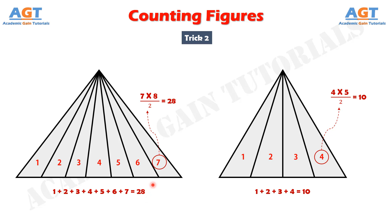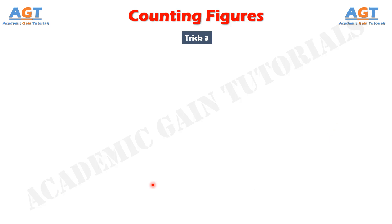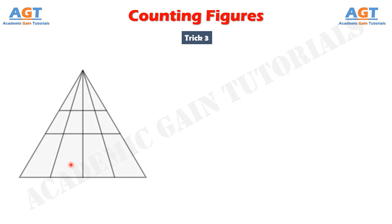So that was the second trick. Now the third trick is simply a combination of trick number 1 and trick number 2. Let's see how — there is a triangle, and we draw some lines inside it as well as some horizontal lines over here.